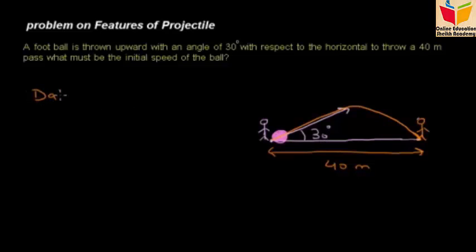Now in the data, we collect the given information. Theta is equal to 30 degrees. And the range of the projectile - you know how we define the range: the horizontal distance the projectile travels in the x-axis. It is given to us as 40 meters. We have to find the initial speed, the value of Vi. We have to calculate the initial velocity with which this student throws the ball upward.